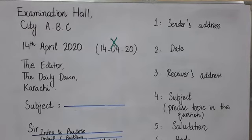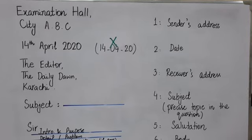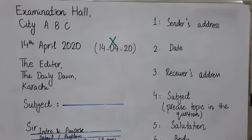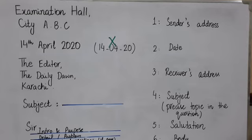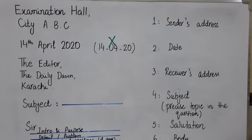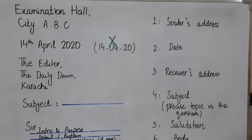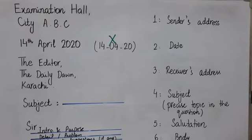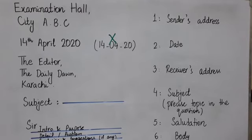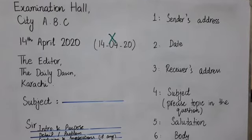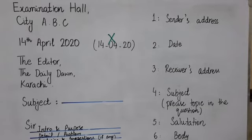The second part is the date. For example, 14th April 2020 — writing it as '14/4/20' is crossed out, meaning you cannot write the date in that way. There is a special format for writing the date. The third part is the receiver's address.